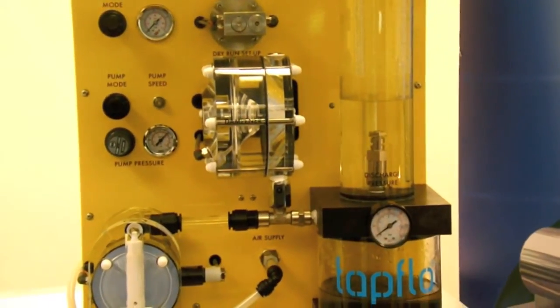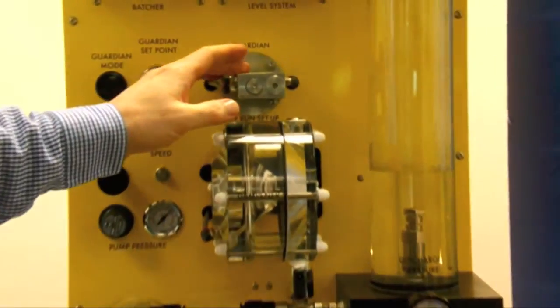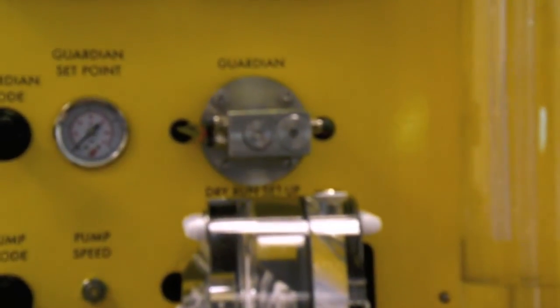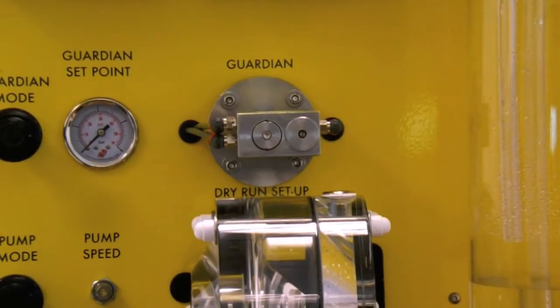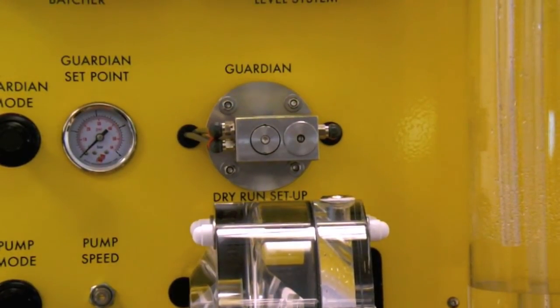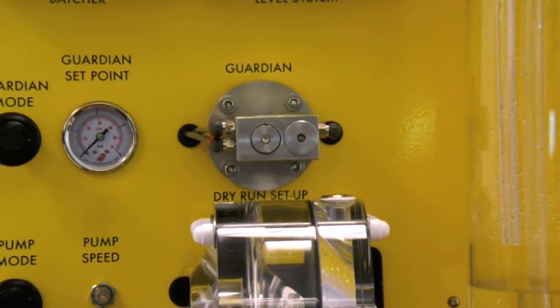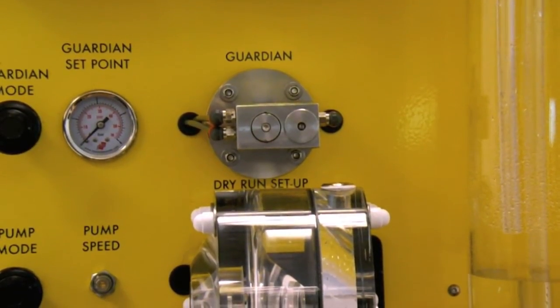The next unit I am going to show you is our guardian unit. Now the guardian can be used to perform a number of different functions. One of them is dry run protection. Another is dead head protection. And the third is for barrier monitoring on a barrier pump.